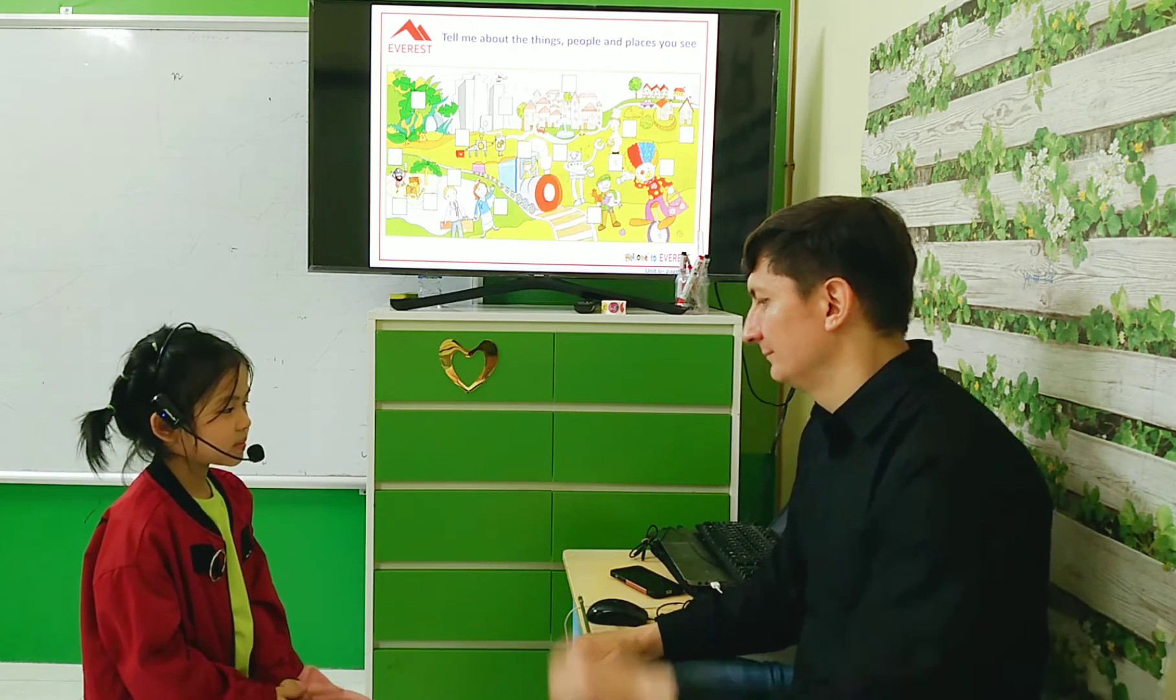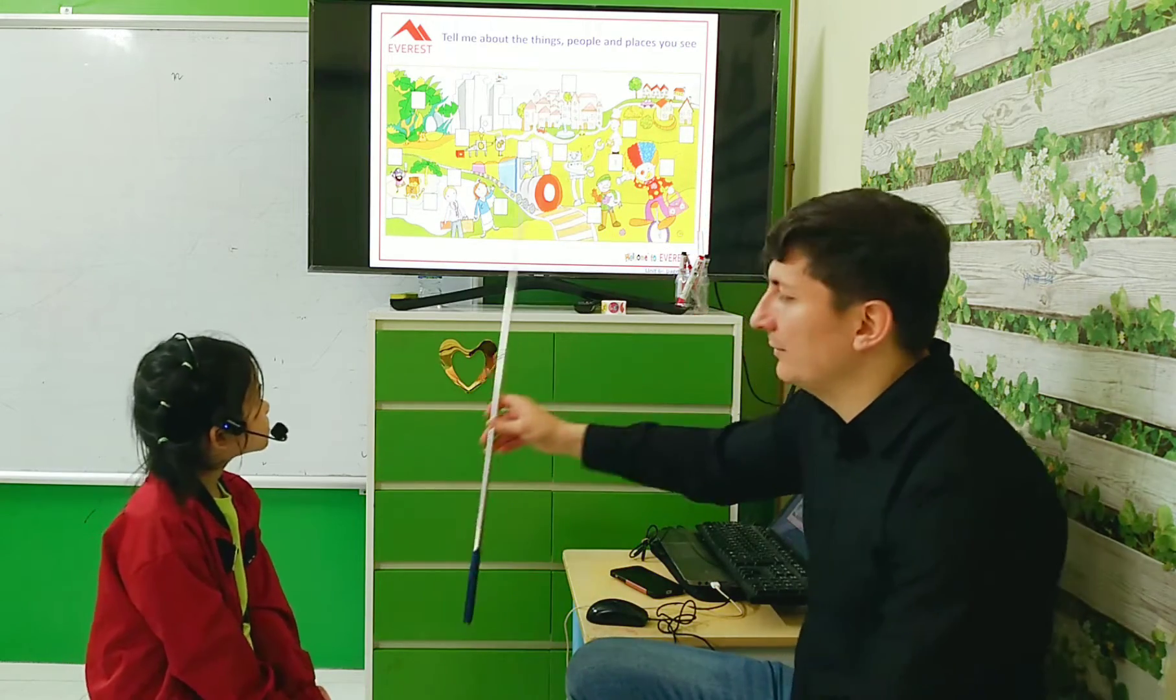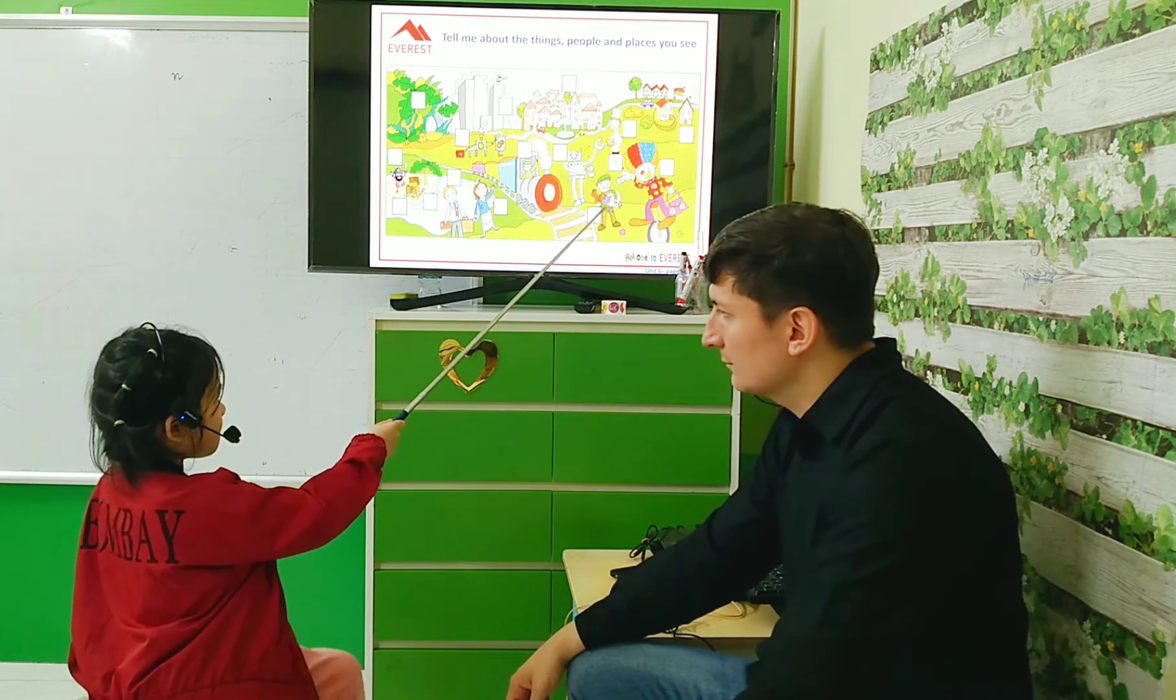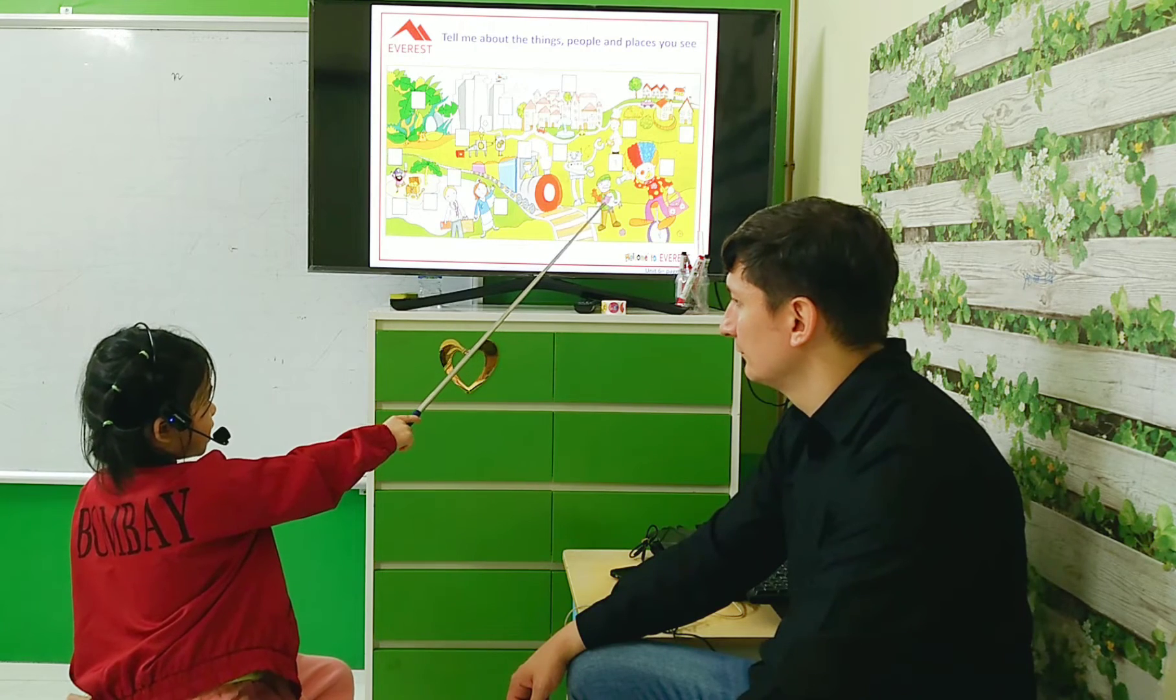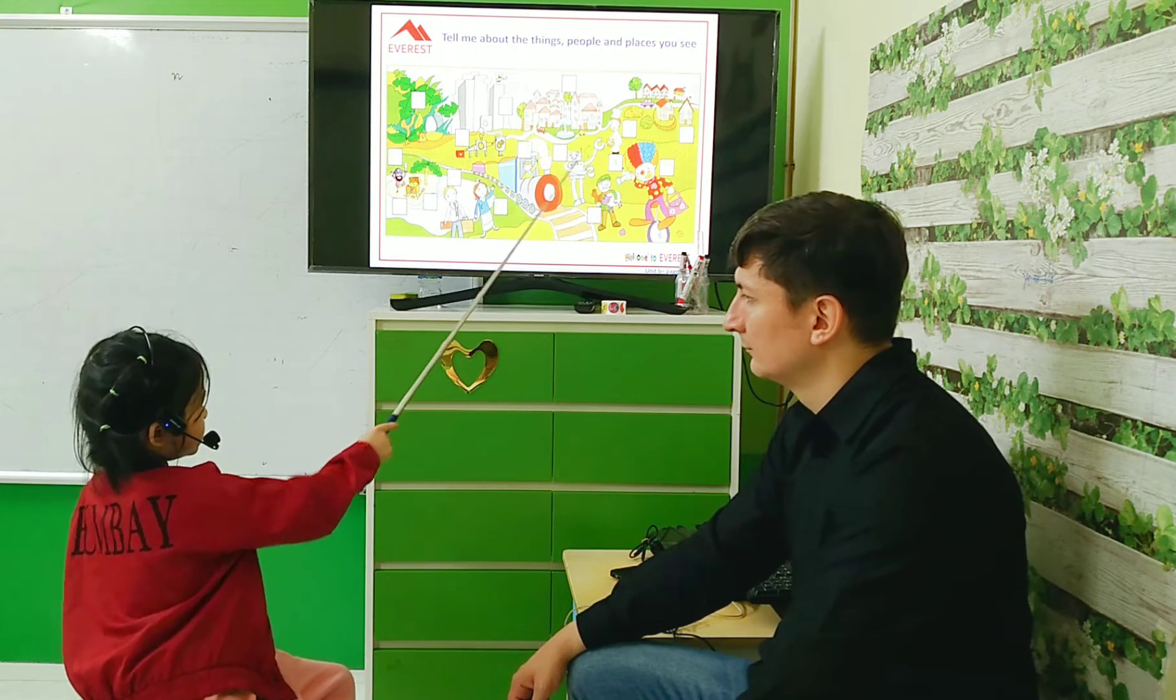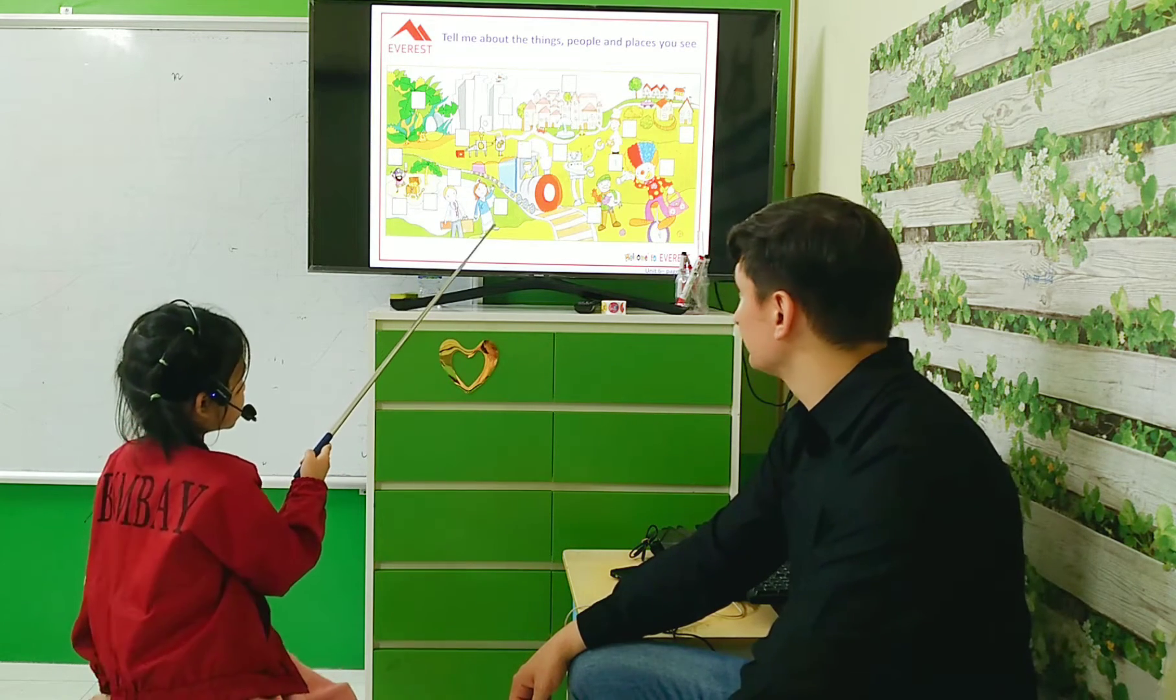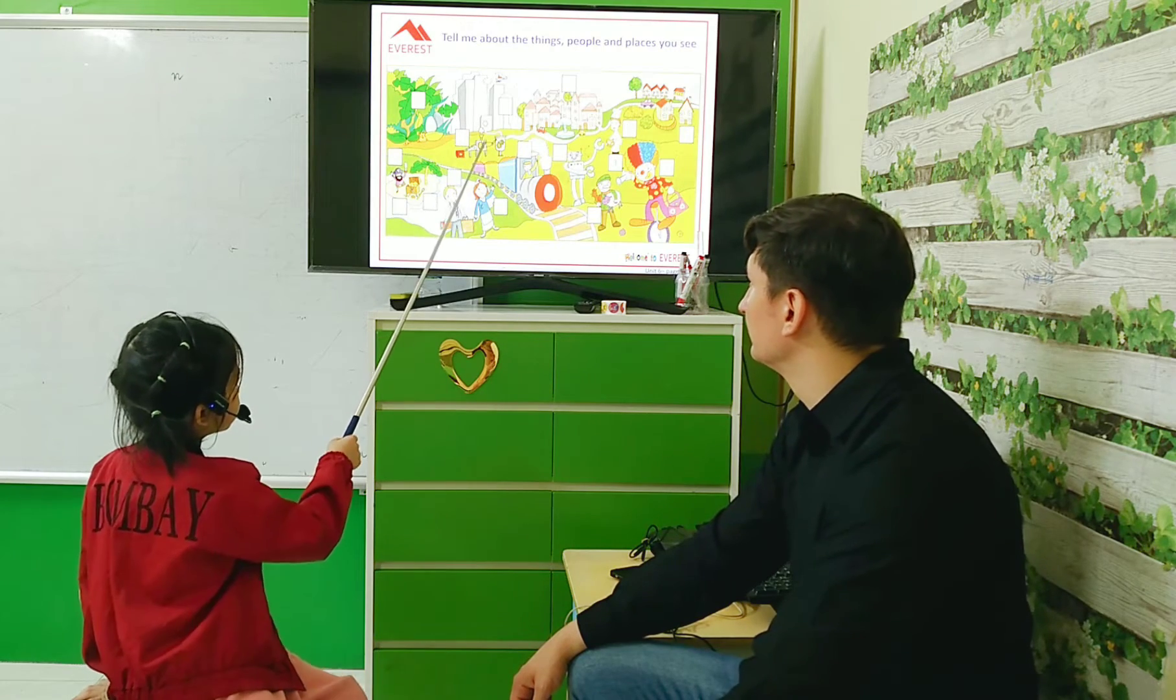How are you today? I'm good. That's good. Let's look at this picture and describe what you can see here. I can see a cloud, a farmer, a coal, a river, a train driver, a nurse, a doctor, a machine.